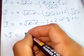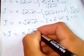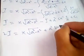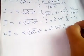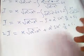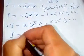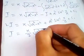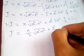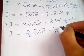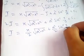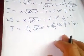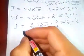Bringing I to the left-hand side gives 2I = x√(a² - x²) + a²·sin⁻¹(x/a) + C₁. Dividing both sides by 2: I = (x/2)√(a² - x²) + (a²/2)·sin⁻¹(x/a) + C₁/2.